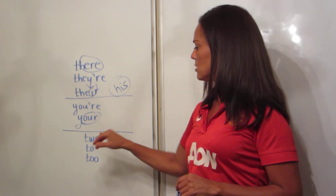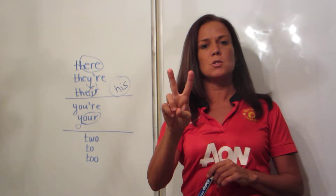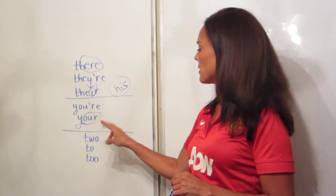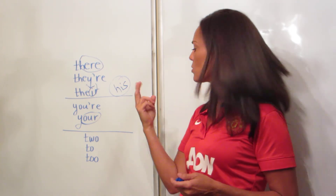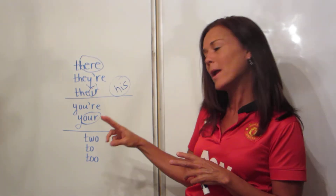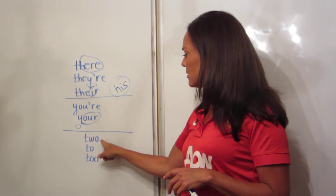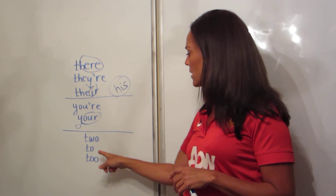Two, two, and two. The two with a W is the number two. Can you remember that by the word twin, or twice, or twilight, or tween? Two is the number with a W.